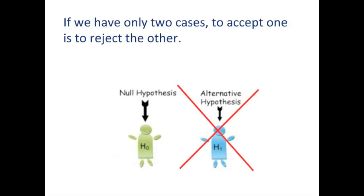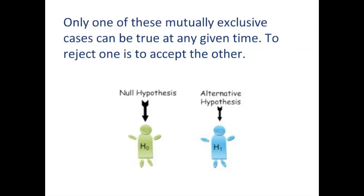Likewise, if we reject the alternate hypothesis, that is to reject the null hypothesis — that is, to accept the null hypothesis. We reject the alternate hypothesis because only one of these can be true at a time. Only one of these mutually exclusive cases can be true at any given time. To reject one is to accept the other.